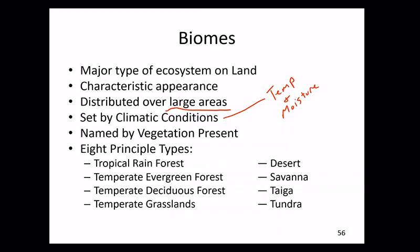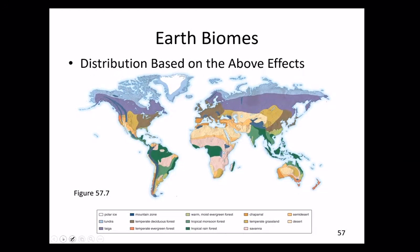There are eight major biomes: tropical rainforest, temperate evergreen forest, temperate deciduous forest (which is the area we're in here in western Pennsylvania), temperate grasslands, desert, savanna, taiga, and tundra. The distribution of biomes across the earth is determined by the relationship between temperature and moisture, as shown on a world map of biome distribution.